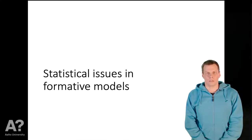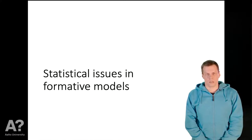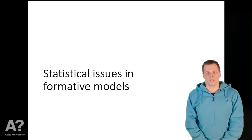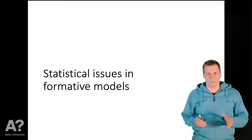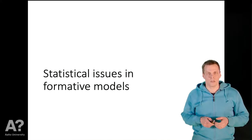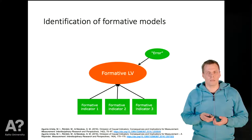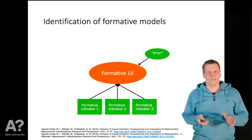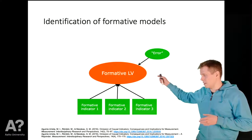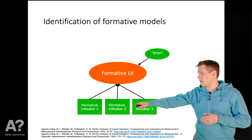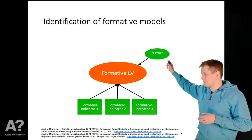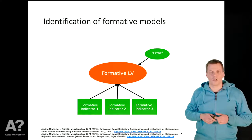The biggest problem in the formative measurement idea is the idea that the indicators cause the construct. There are also statistical issues in how these models are specified and identified. The root of the problem is that a formative model where we specify a latent variable as a function of observed variables — three in this example — and an unobserved error term is not identified in itself.